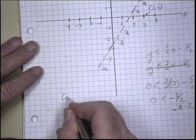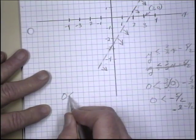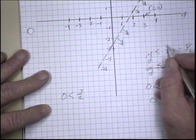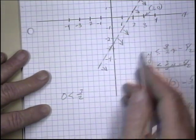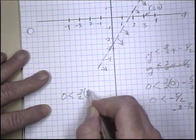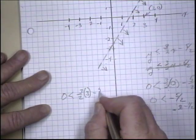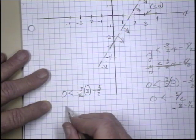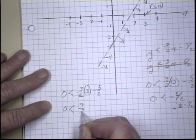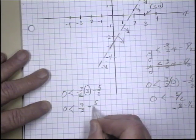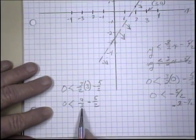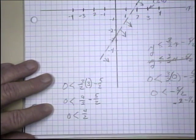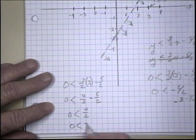We have y, which is 0, is less than 3 halves. This is a 3 halves. X, which we said was 3, minus 5 halves. Well, this would be 0 is less than 9 halves minus 5 halves. 9 halves minus 5 halves is 4 halves, which is 2, right? So is 0 less than 2?